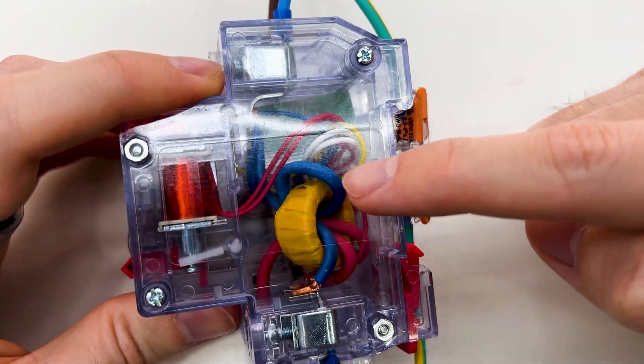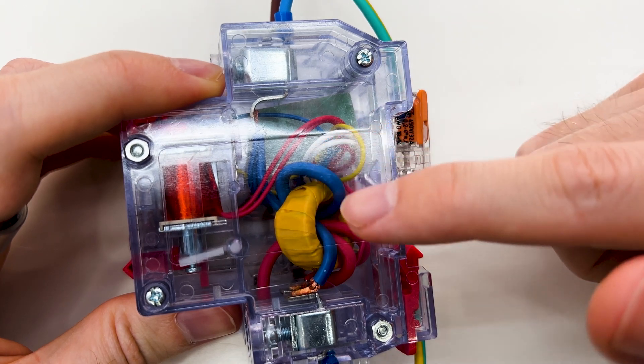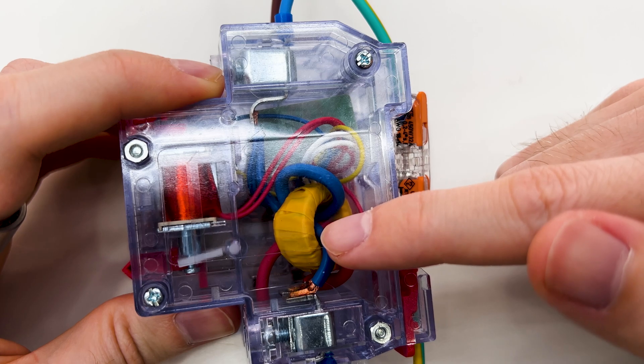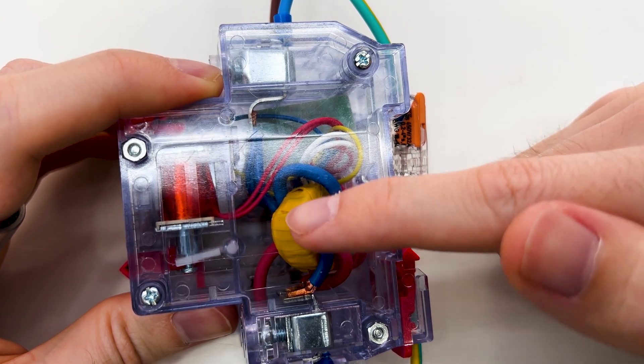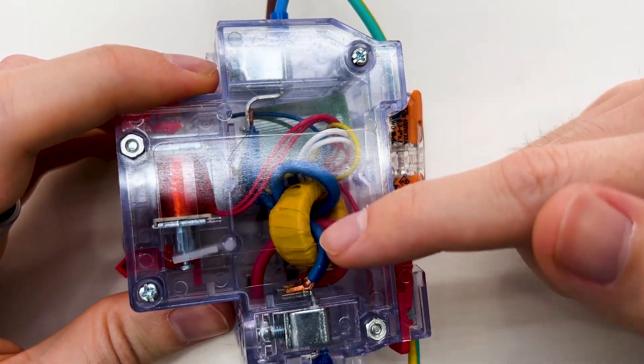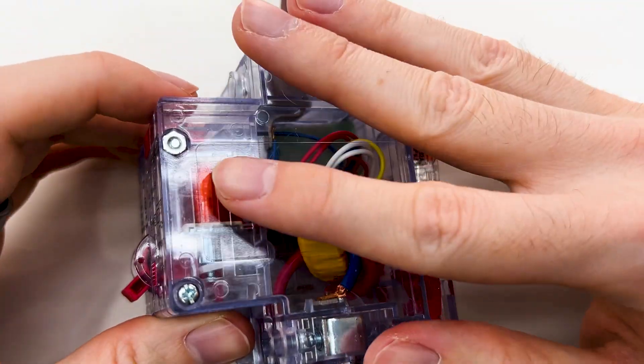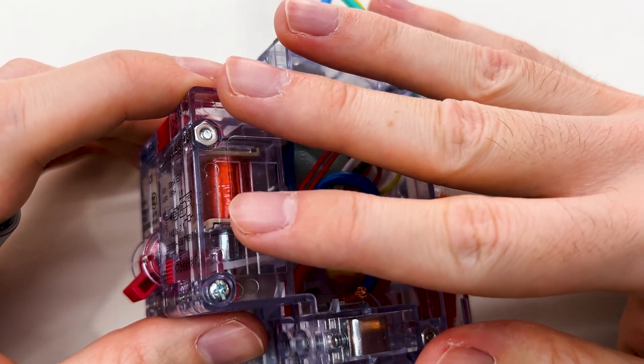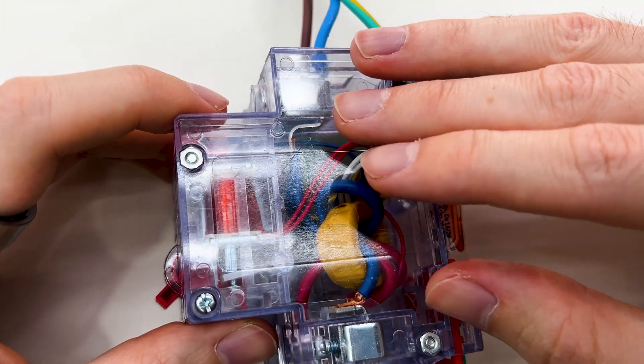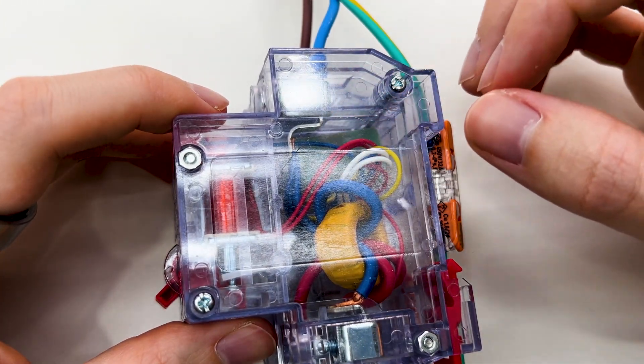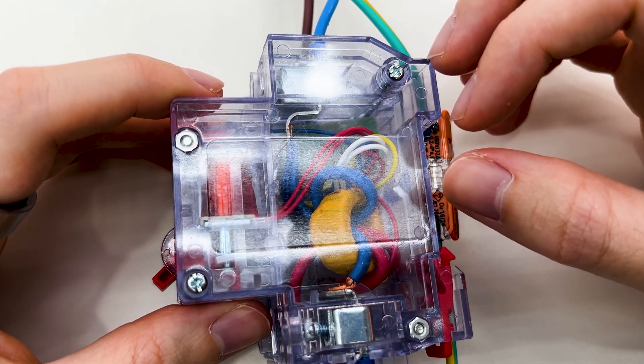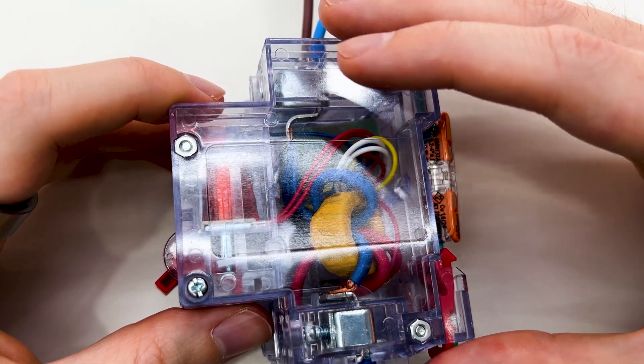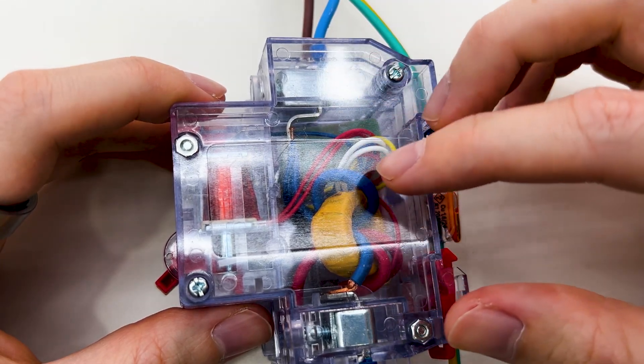This coil detects if the current going through the blue and red cables, so live and neutral cables, is the same. If the current is not matching, there is a difference between current on these two cables. And breakers have the allowed current, for example, 30 milliamps. If the current is above, it means that the current is leaking somewhere, for example, through someone's body. So if it detects that the current doesn't match on those two cables, it will trigger.